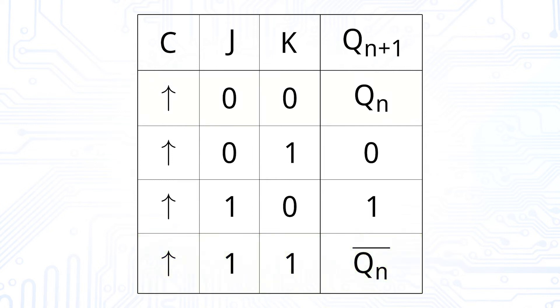As an aid, we can think of the words jump for J as the output jumps to high, and kill for K as the output goes to zero.